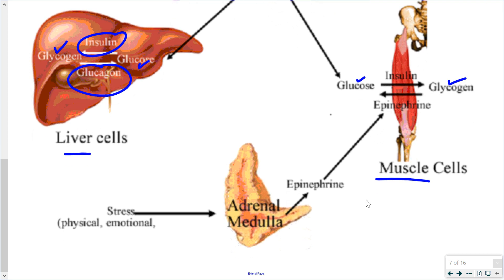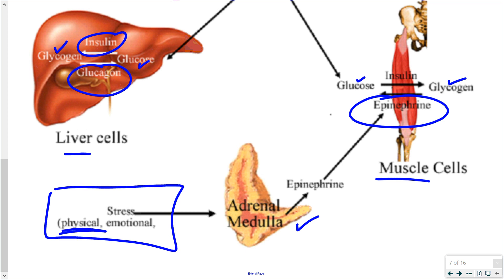Glucagon's primary target is the liver, reversing what insulin did — releasing glucose back into the blood for cellular respiration. For muscles, the hormonal stimulus comes from epinephrine, produced by the adrenal medulla. Epinephrine is a stress hormone; during physical exercise, muscle cells need glucose for cellular respiration to make ATP and continue contracting. Epinephrine causes glycogen in muscles to be converted to glucose right where it's needed, without having to move it into the blood first.